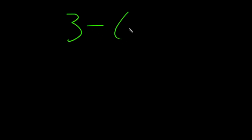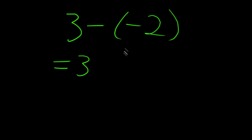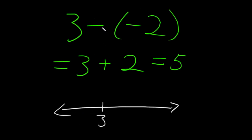Now let's see what happens when we subtract a negative number. Say we have 3 minus negative 2. Before, when we were adding a negative, we had positive times negative giving subtraction. This time minus negative is like two negatives multiplying, and that gives a positive. So we can rewrite this as 3 plus 2, which equals 5. On the number line, starting at 3 and going 2 to the right lands us at 5.